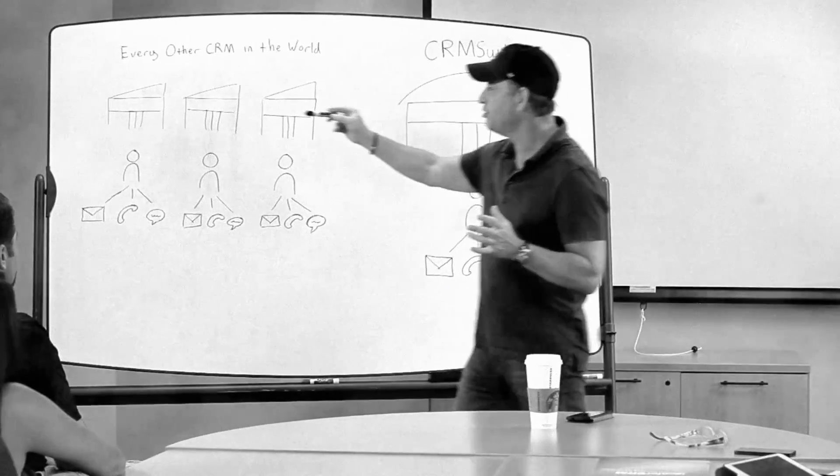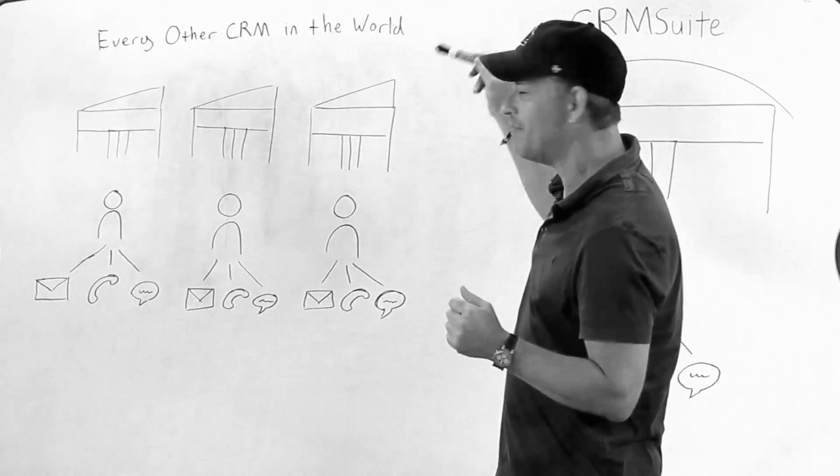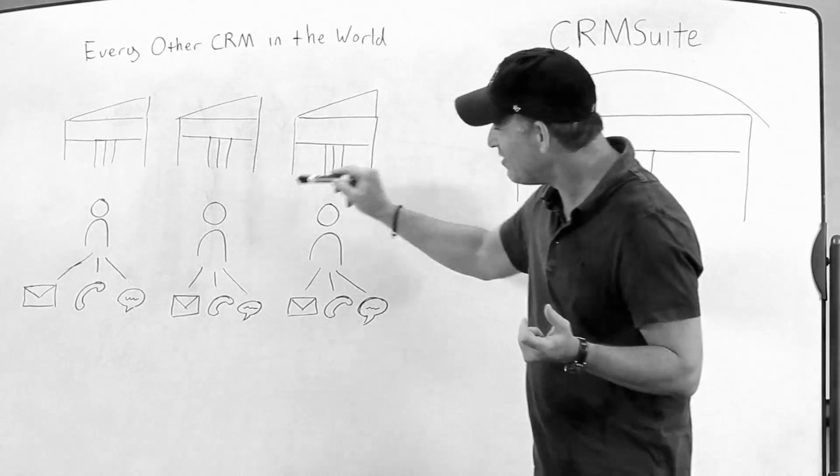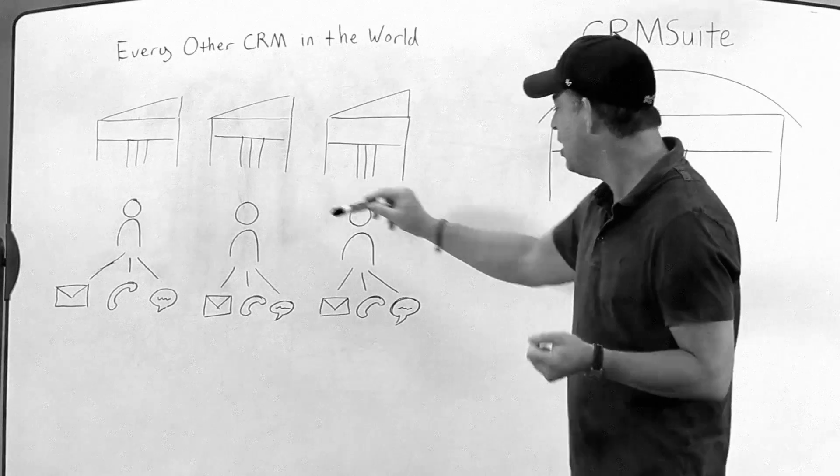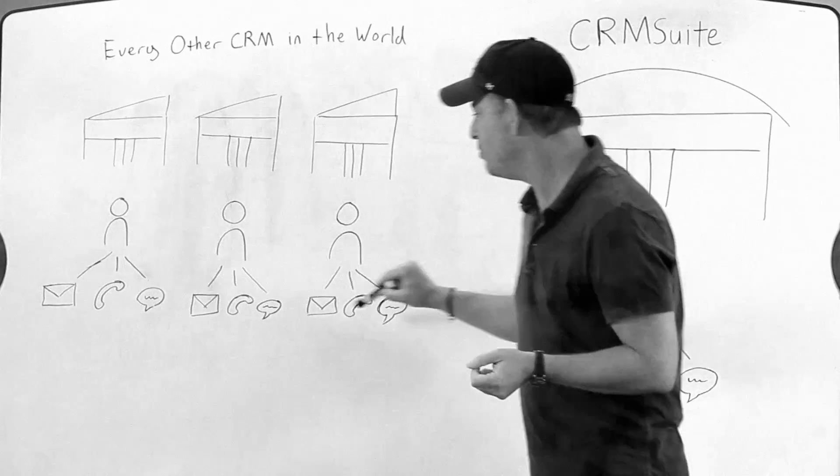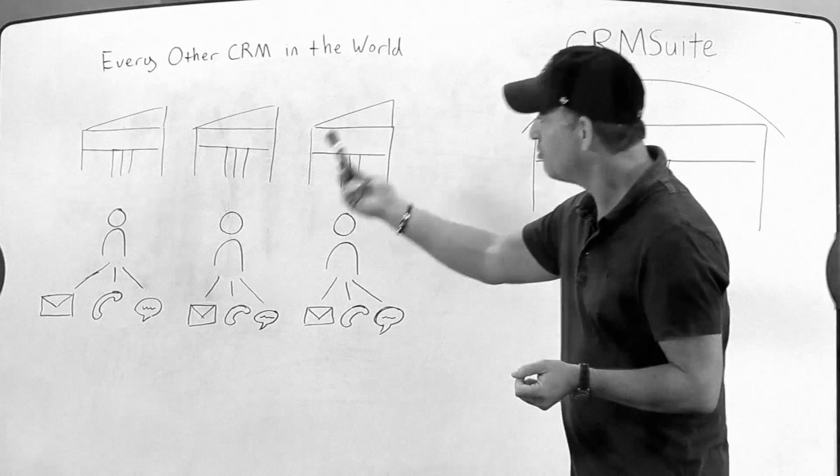The problem is in multi-store groups, you've got three or four or five, 10, 15, 20 different dealerships, 20 different records for the same customer, and then we're doing all kinds of different communication to one guy from each rooftop.